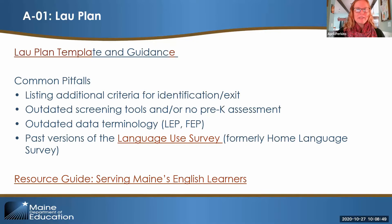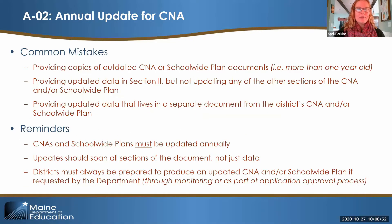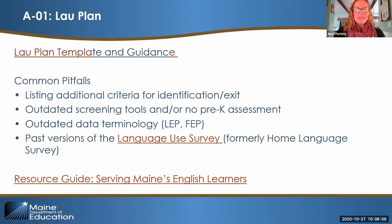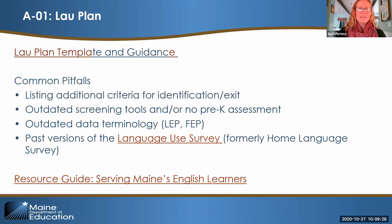As I review Lau plans submitted by various districts this year, one thing to make sure is that your Lau plan includes an explanation of how English learners are identified using multiple criteria. For example, a Lau plan might say that in addition to the language use survey and the screening tool, we will also consider classroom observations, teacher feedback, and parent input. However, the state of Maine identification policy really comes down to just two things: the language use survey and the English language proficiency screener. Those are the only two things that can be considered in whether a student is identified as an English learner.